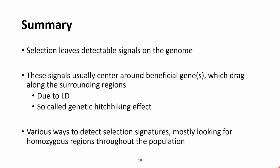Summarizing the selection signature topic: selection, either natural or artificial, leaves detectable signals on the genome. These signals center around the beneficial gene or genes, which drag surrounding genomic regions with them. This so-called genetic hitchhiking effect is caused by linkage disequilibrium — surrounding regions tend to be inherited together, and if a gene is important for selection, it spreads through the population along with its surrounding regions, creating segments that are very homogeneous across the entire population.